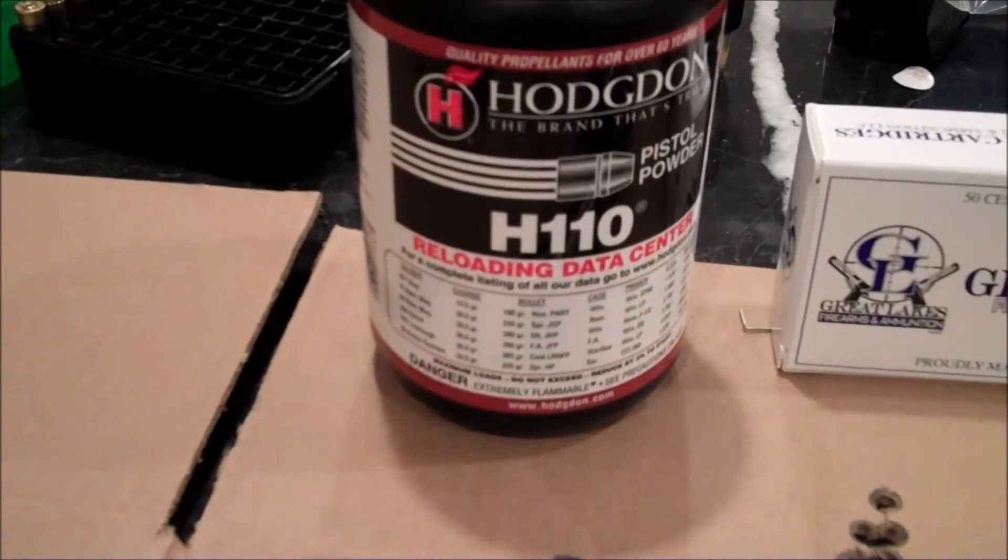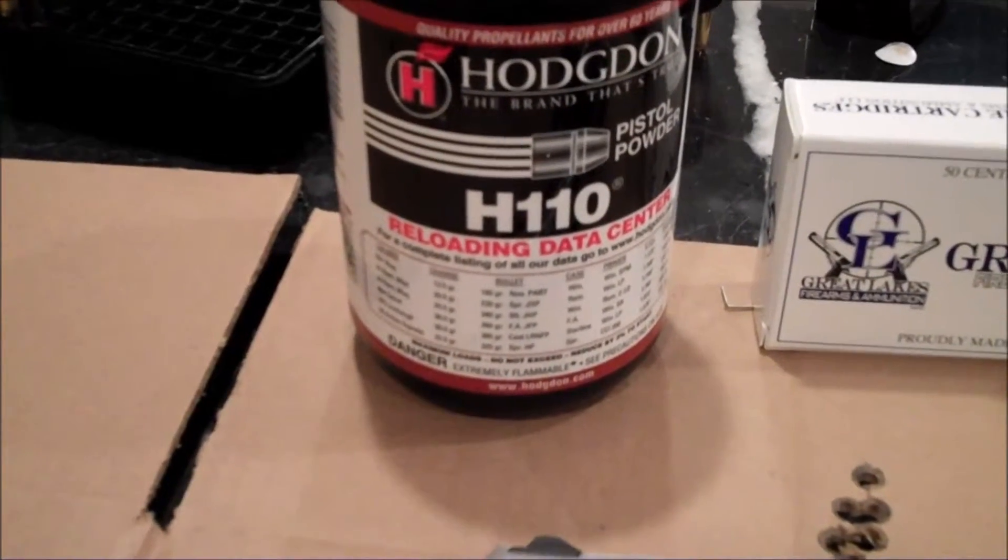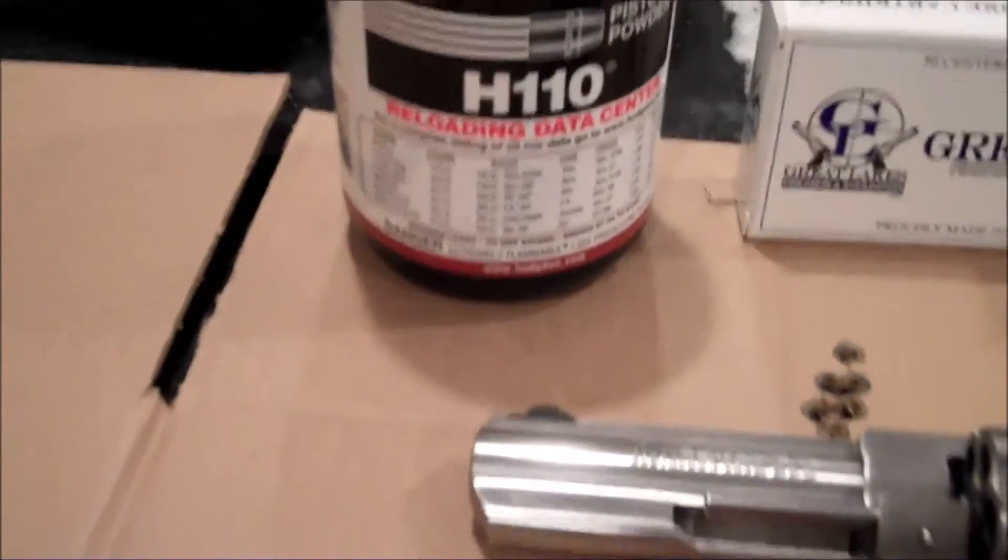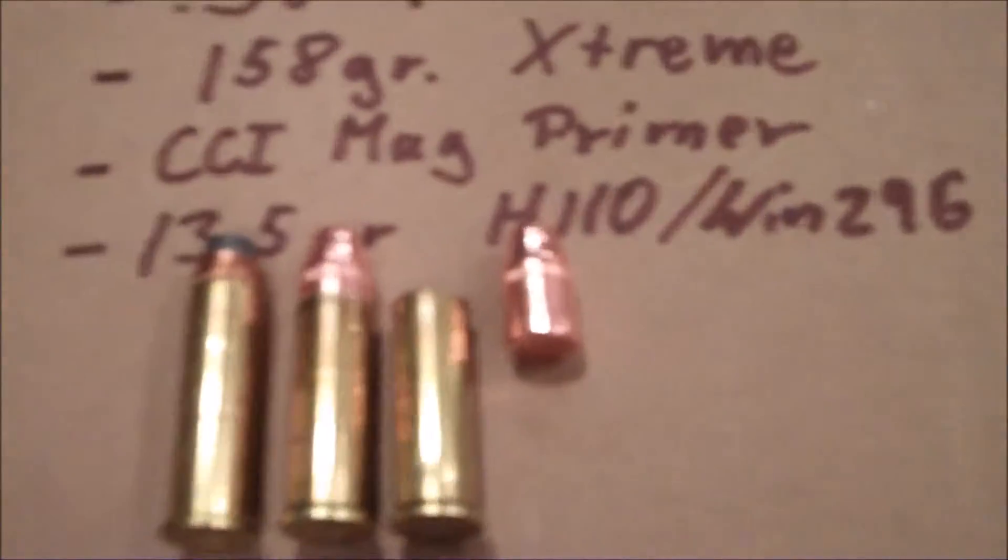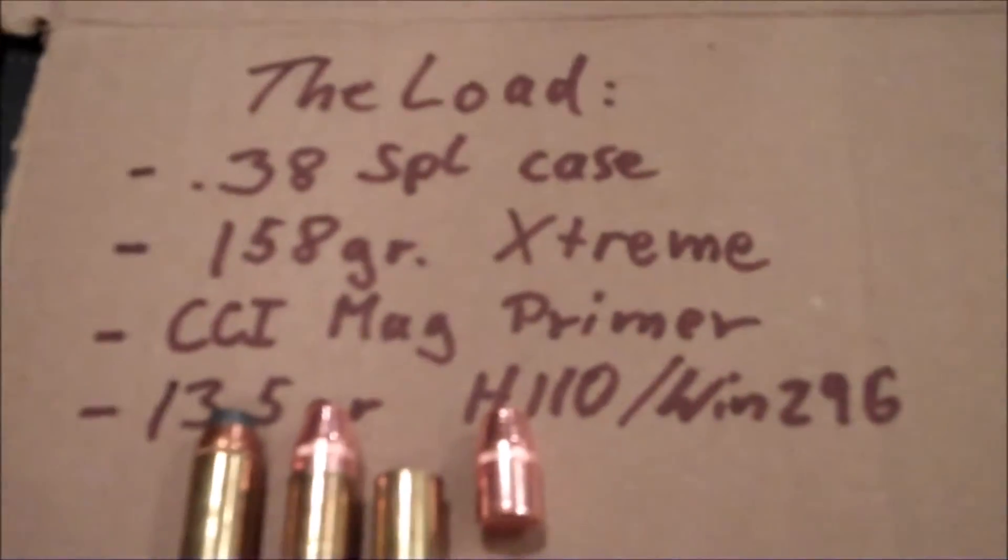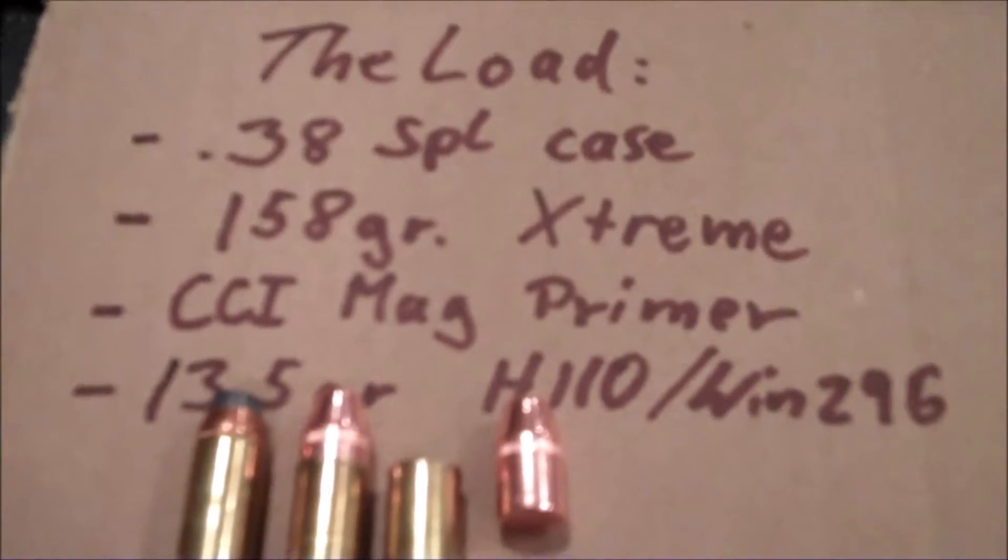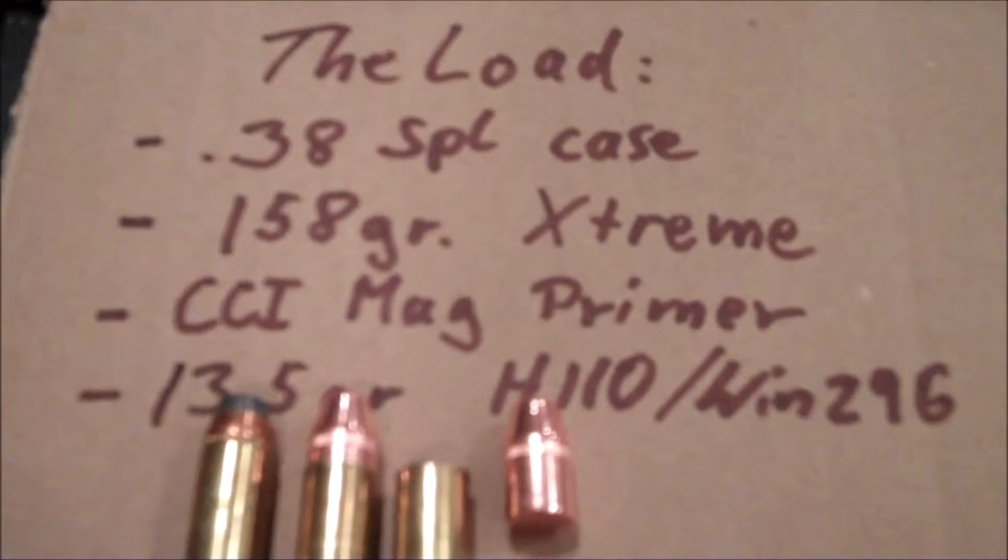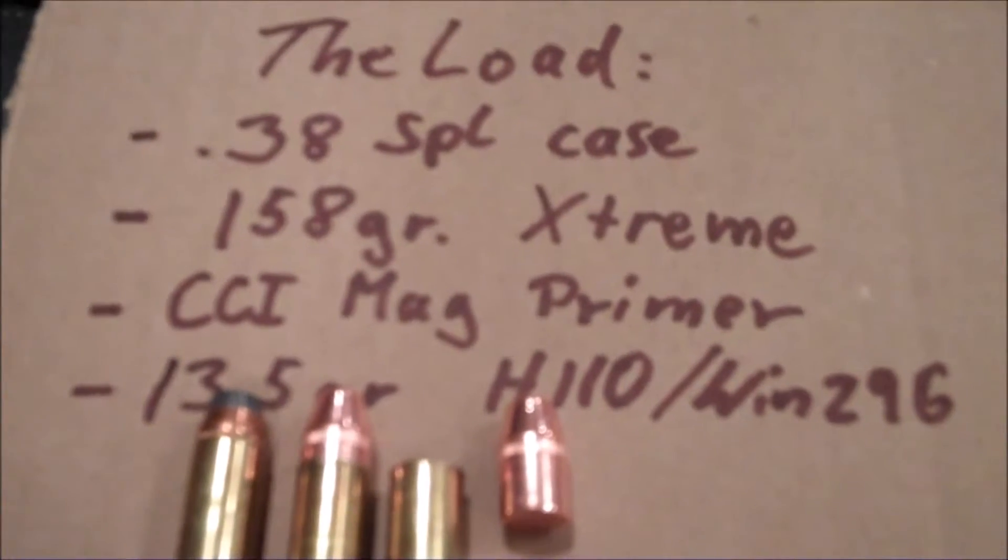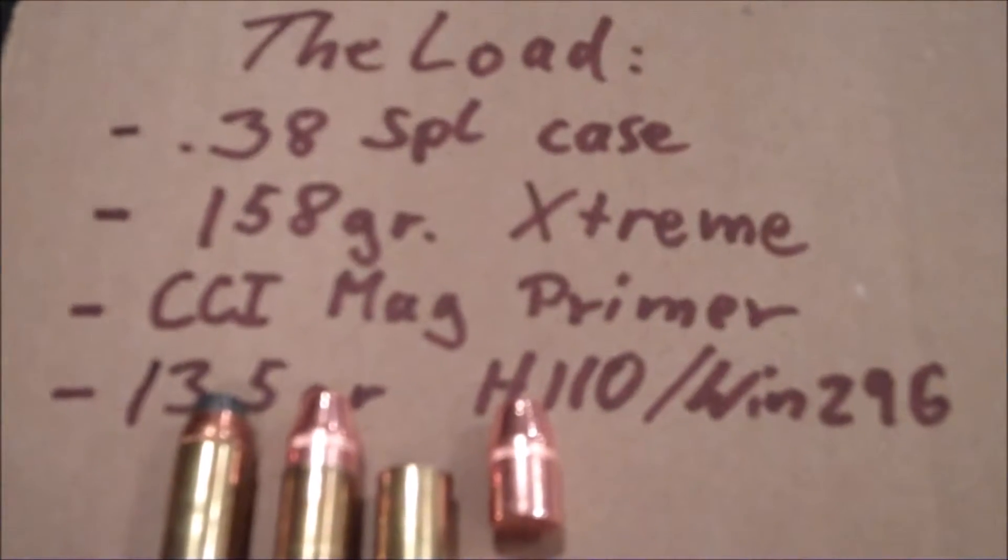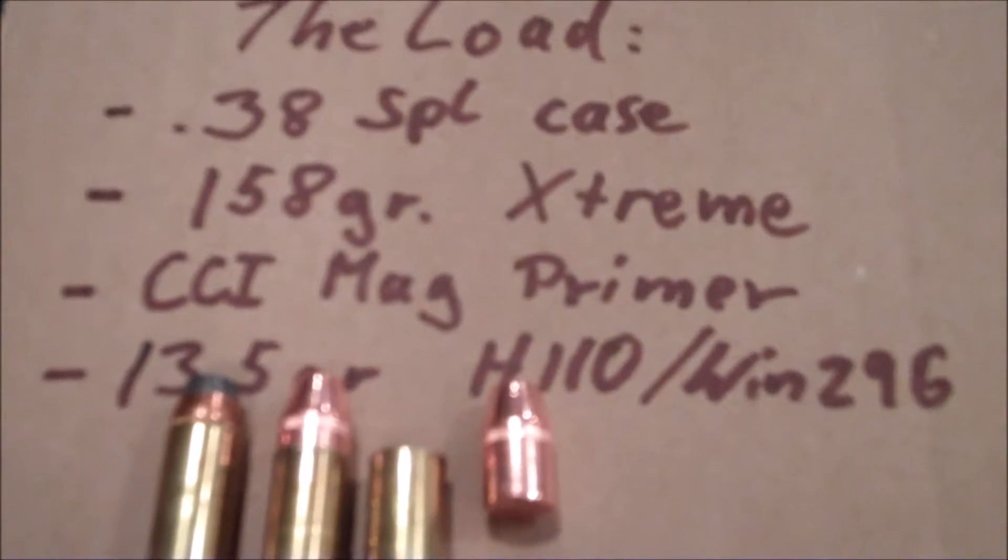And then here's the H110, which is the powder that I used, and then I used the CCI mags. So just for reference, here is the load written down. Again, 38 special case, 158 grain Extreme Bullets, CCI mag primers, and I used 13.5 grain of H110.